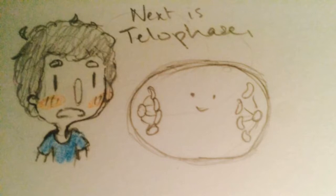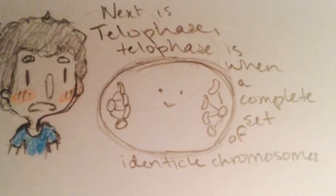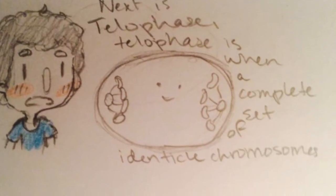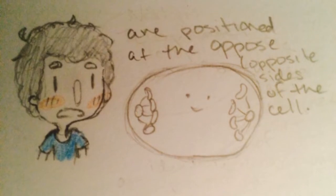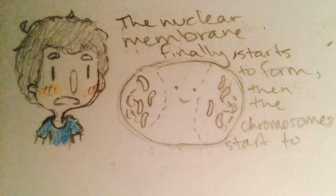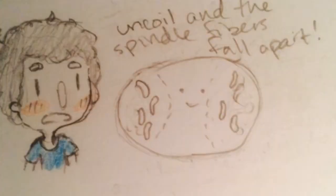Next is telophase. Telophase is when a complete set of identical chromosomes are positioned at the poles of the cell. The nuclear membrane finally starts to form. Then the chromosomes start to uncoil and the spindle fibers fall apart.